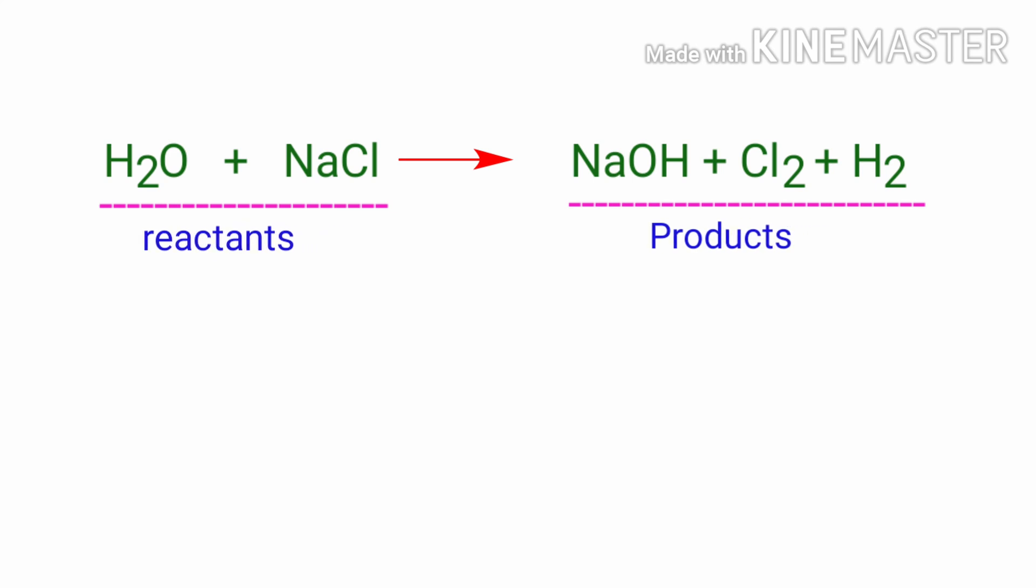In this equation, the reactants are water and sodium chloride, and the products are sodium hydroxide, chlorine, and hydrogen.